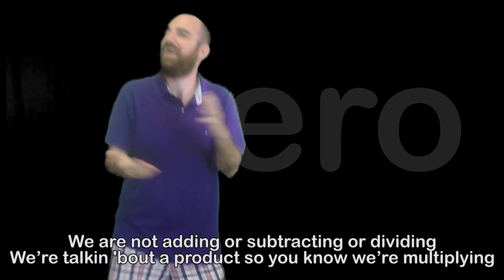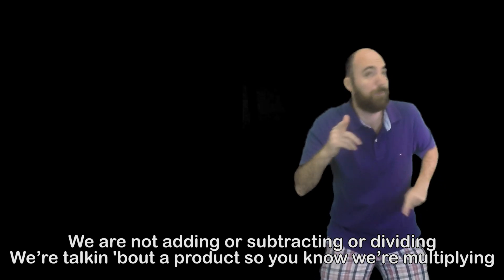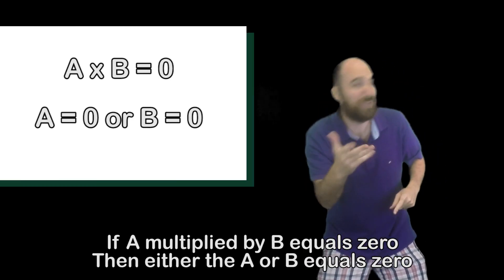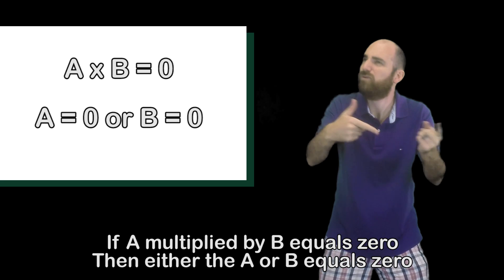We are not adding or subtracting or dividing. We're talking about a product, so you know we're multiplying. If A multiplied by B equals zero, then either the A or B equals zero.